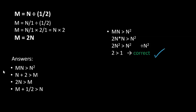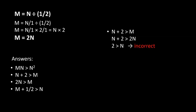Now let's check the other answers and see why they are incorrect. The second option says that N plus 2 is greater than M. I substitute M and get N plus 2 is greater than 2N, so N is less than 2. It doesn't have to be less than 2. N can get any value. Therefore, it is incorrect.